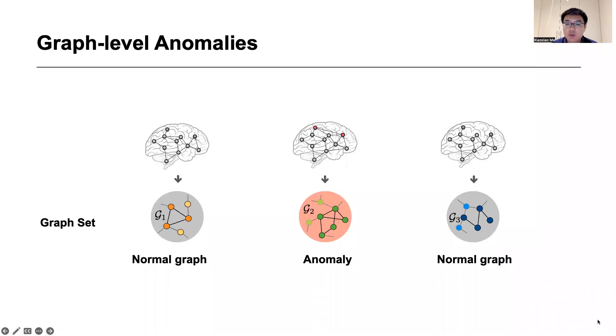When data is modeled as a set of graphs to represent real objects and their relationships, we aim to detect abnormal graphs in a set, which are known as graph-level anomalies.